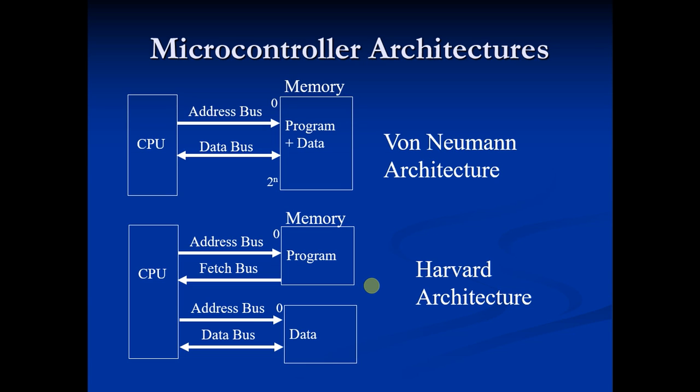There are two basic and main architectures: von Neumann and Harvard architecture. Now first we will talk about von Neumann architecture.